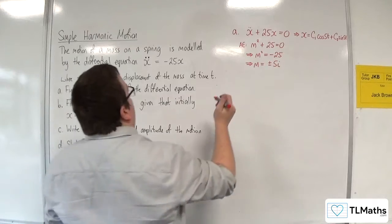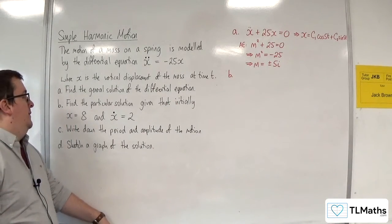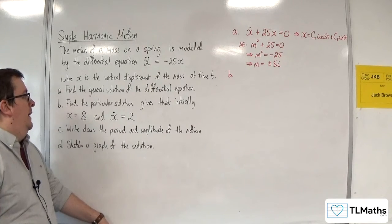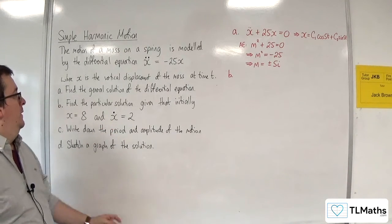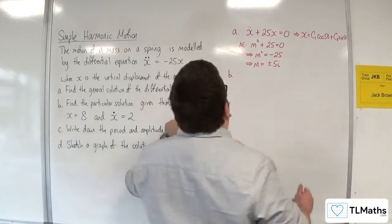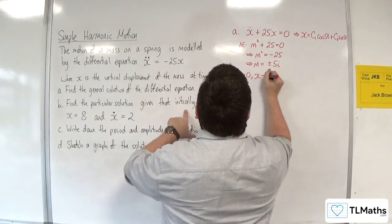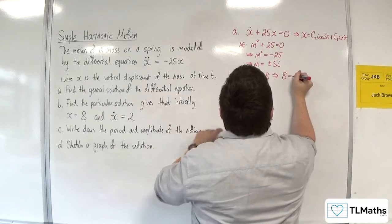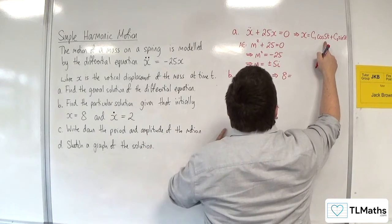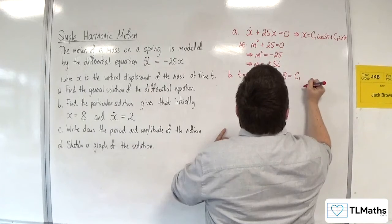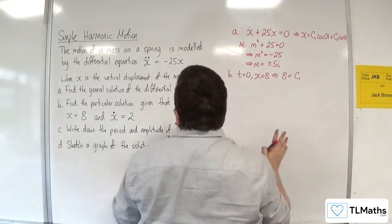Part B, find the particular solution given that initially x equals 8 and x dot, so dx/dt, is equal to 2. So initially means that t is 0. So when t is 0, x is equal to 8. So we would have 8 is equal to, cosine of 0 is 1, so we would have c₁, sine of 0 is 0, so c₁ is equal to 8.